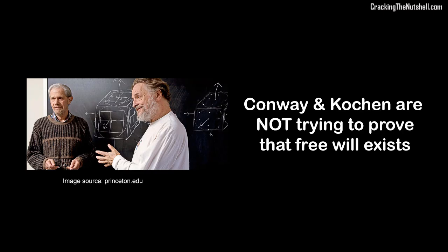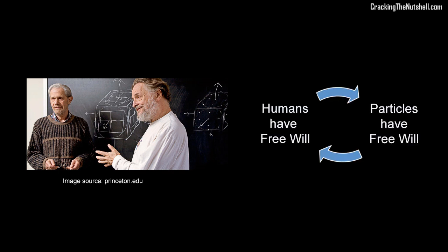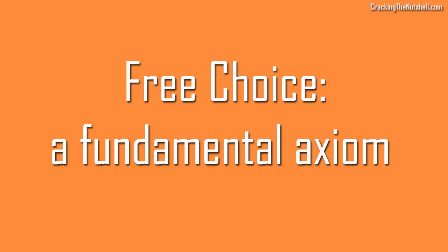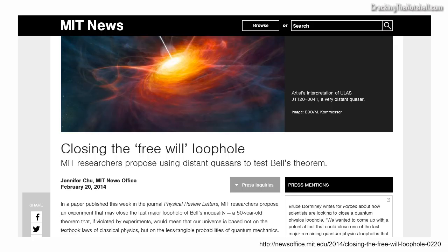It is worth stressing again that Conway and Kochen are not trying to prove that free will exists — their argument would be completely circular if that was the case. What they are doing is, by explicitly making the free choice of the experimenter a fundamental axiom in quantum mechanics, they are ultimately attempting to close one of the last loopholes in Bell inequality tests — the so-called free will loophole.